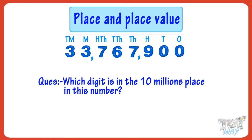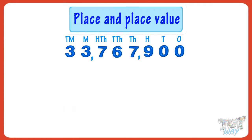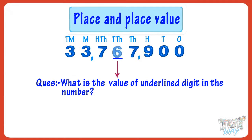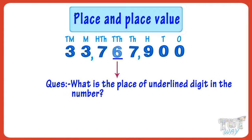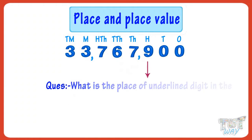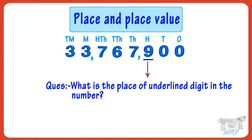The answer is three. Now, what is the value of the underlined digit in the number? The value of the underlined digit is sixty thousand. Now, what is the place of the underlined digit in this number? The place of the underlined digit is the ten thousands place.